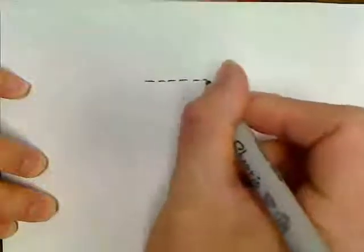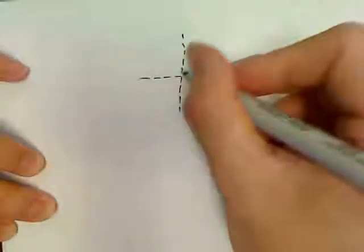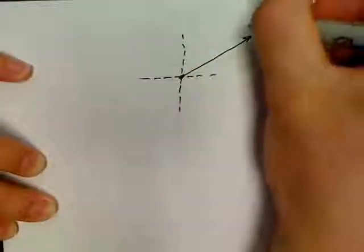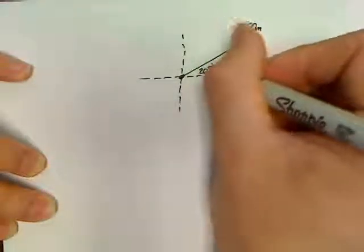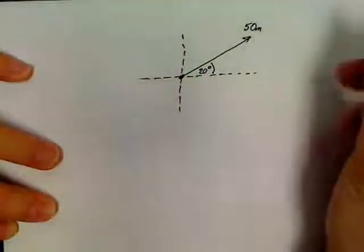So let's say, for example, a very basic problem might be something as simple as, we might have a basic problem where you have a vector. First, we'll start out with our crosshairs. And let's say that someone walks 50 meters at an angle of 20 degrees. In this case, it'd be north of east.